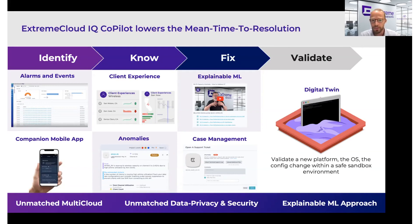On the fixing side, the explainable machine learning gives you a recommended fix for the issue. If you're not able to fix it yourself, there's also a way to open a case with Extreme Support's GTAC team. In an automated way, you can have an issue, and if the recommended fix didn't resolve it, you can immediately open a ticket based on that anomaly — one that the GTAC team can see and associate with your specific issue.